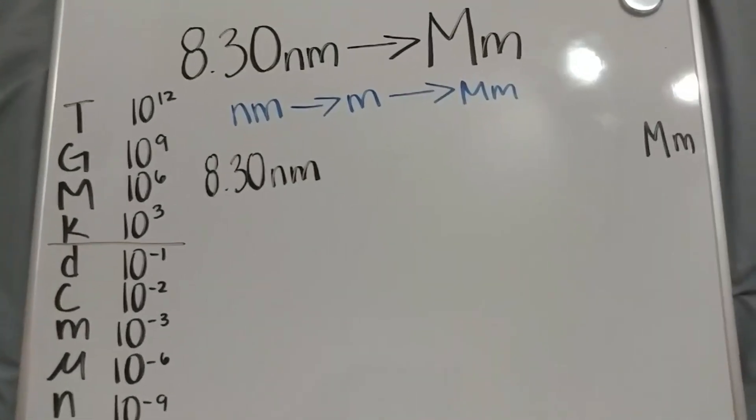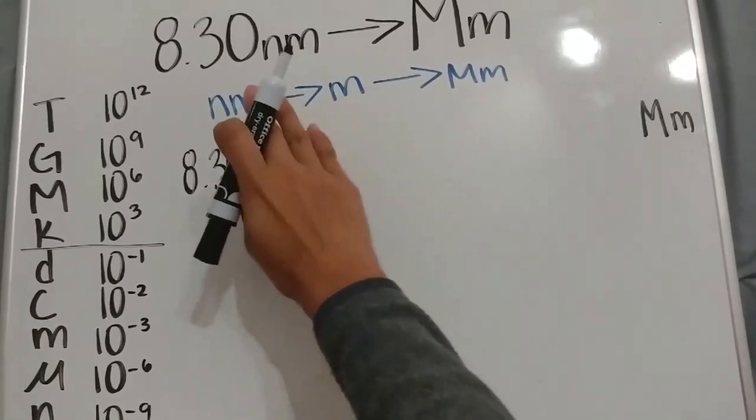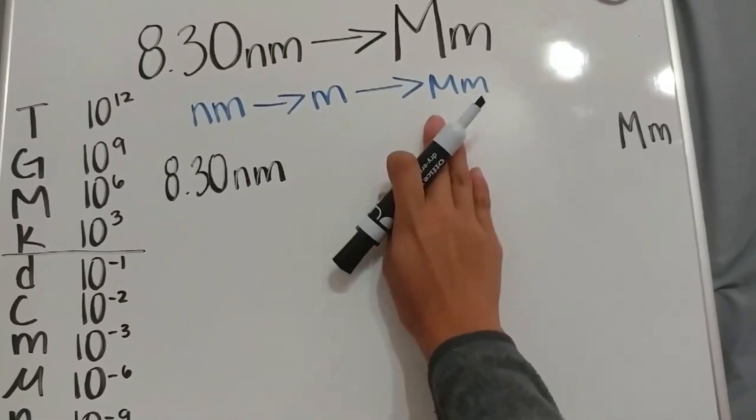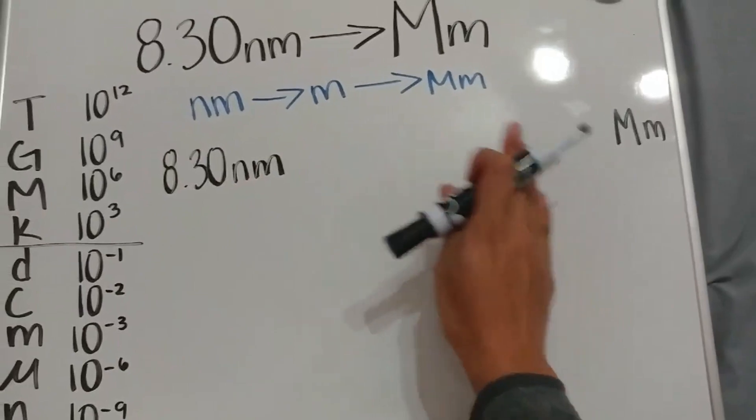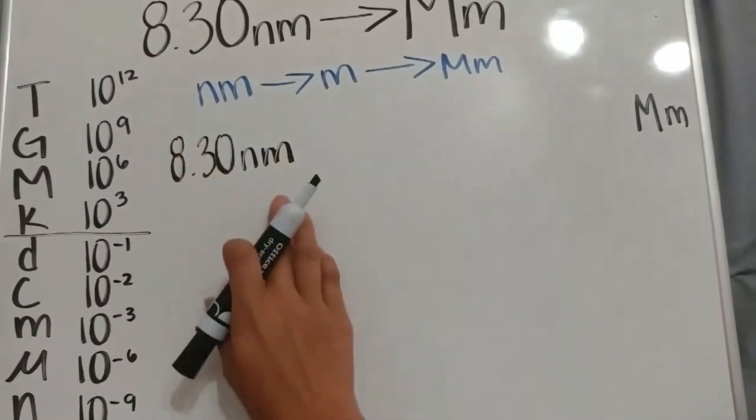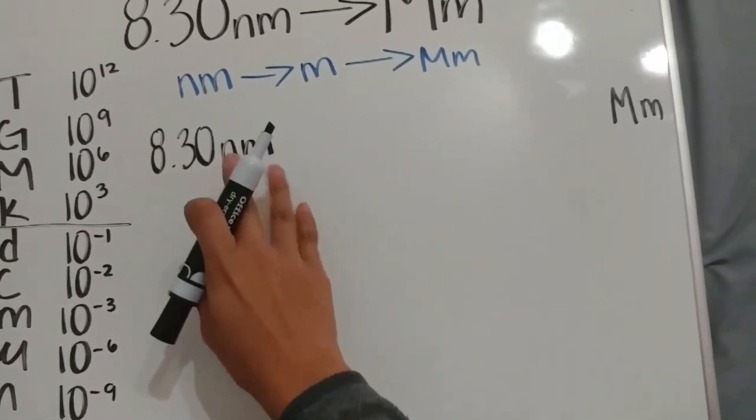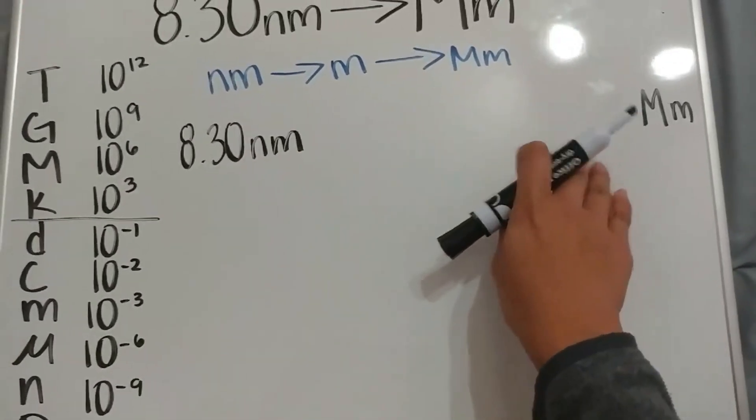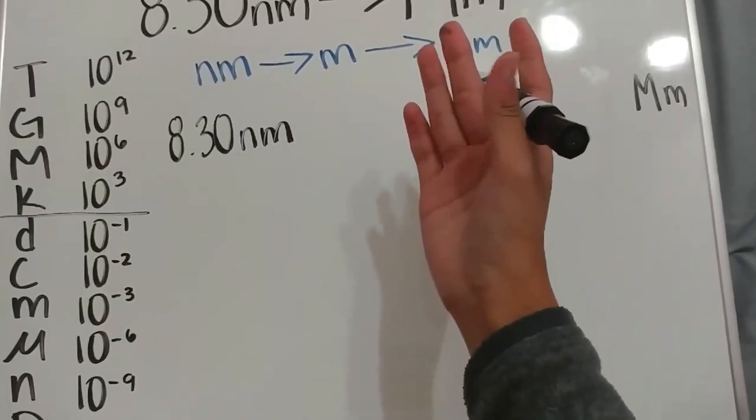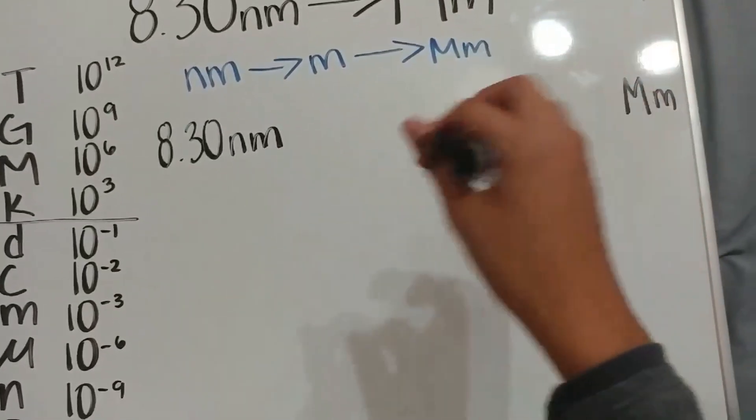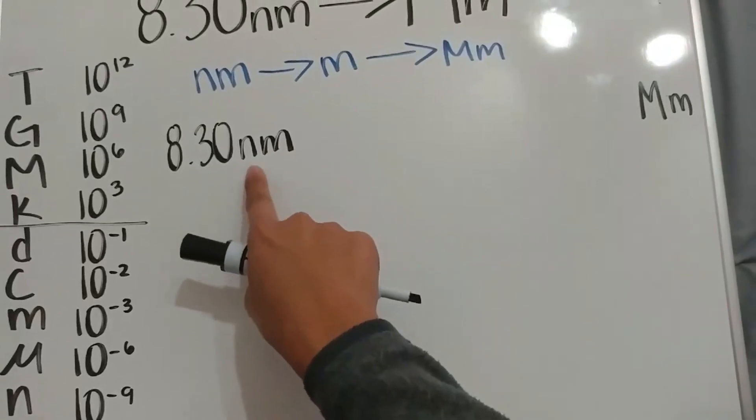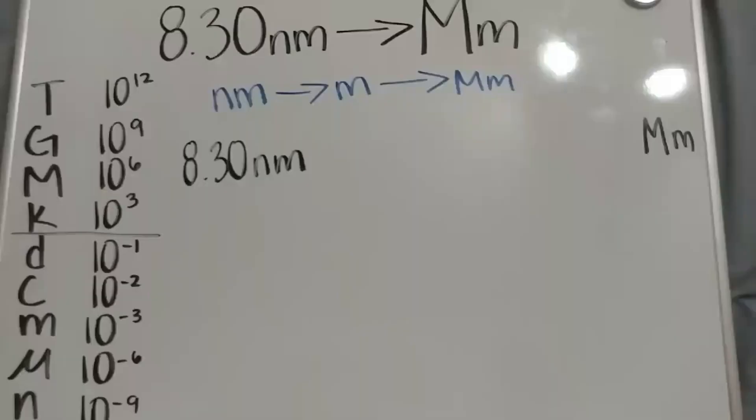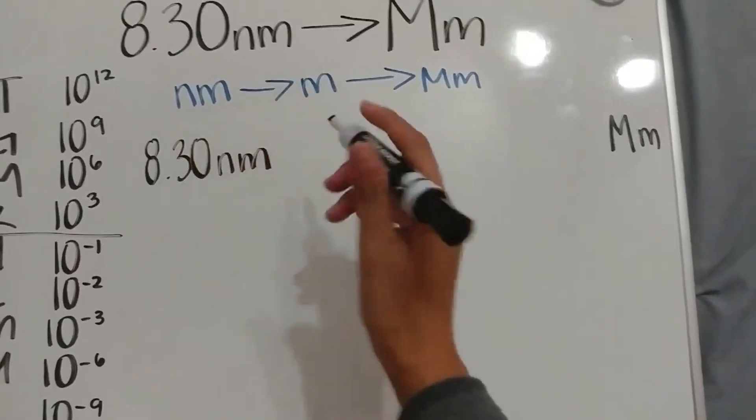Next, you want to write a conversion plan to make sure that you're following the steps needed to properly convert from nanometers to megameters. So in this plan, we originally start with nanometers, so we can't really convert directly from nanometers to megameters, because it just is not appropriate. So you would have to first convert from nanometers to meters.